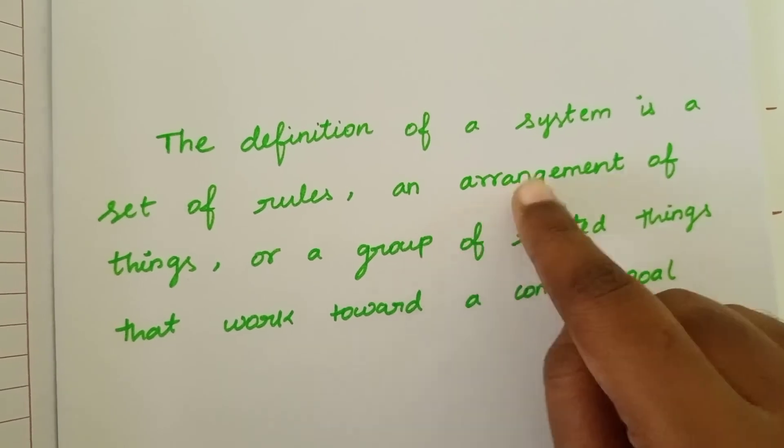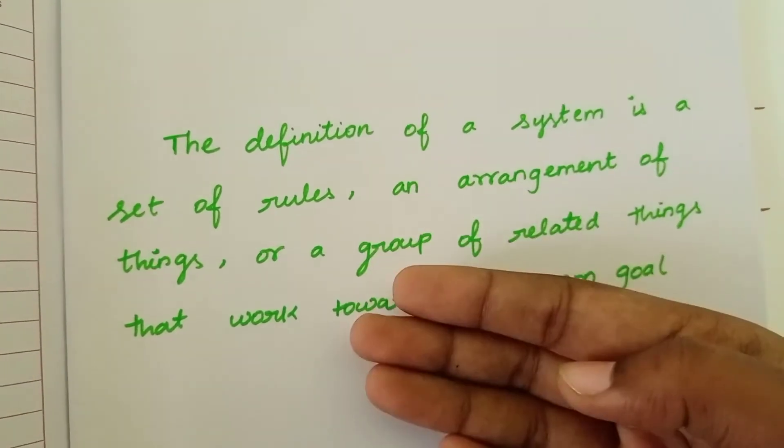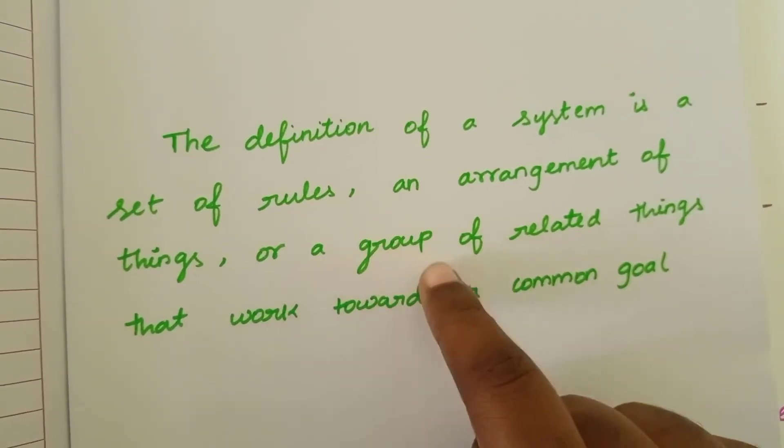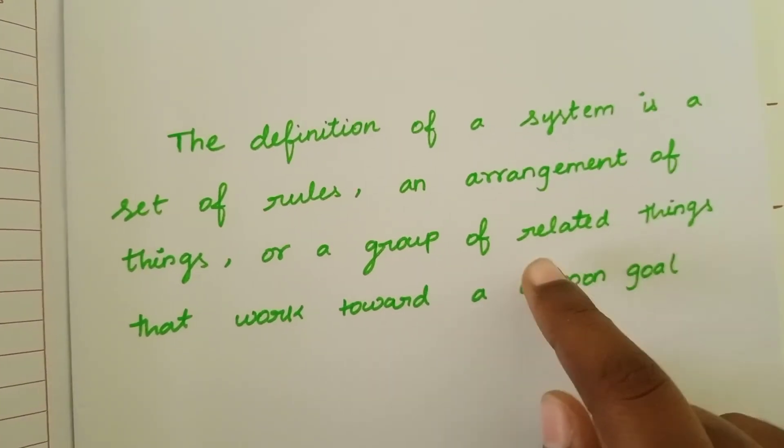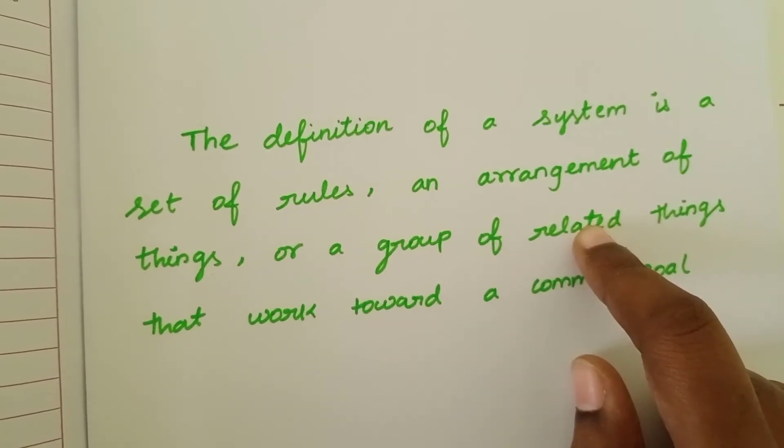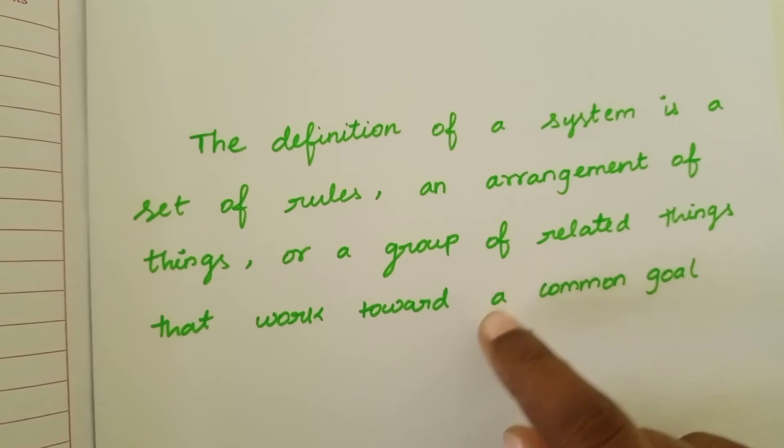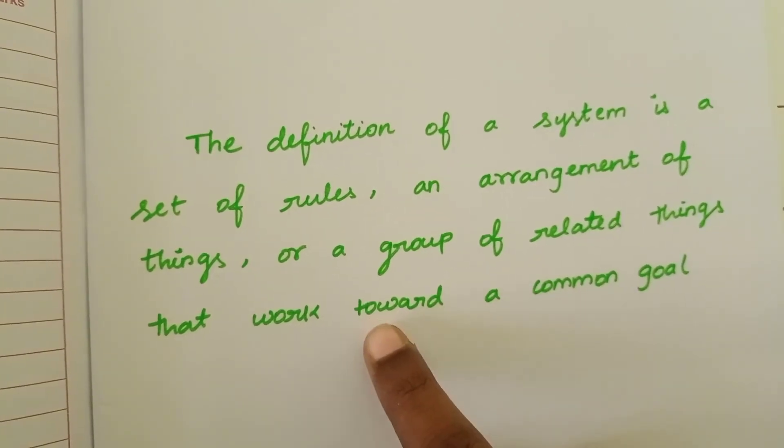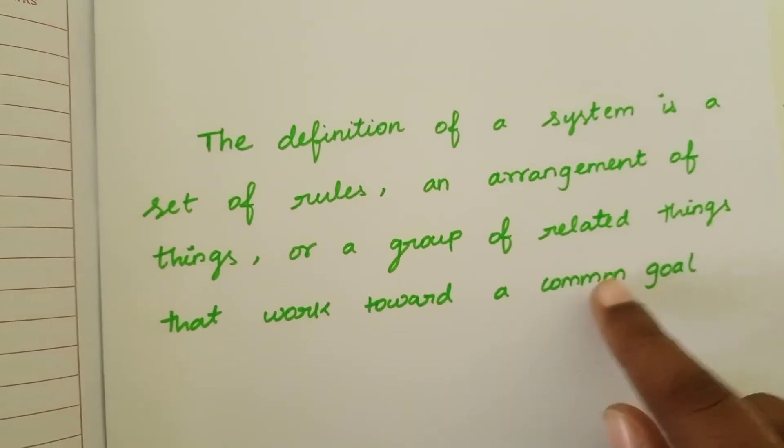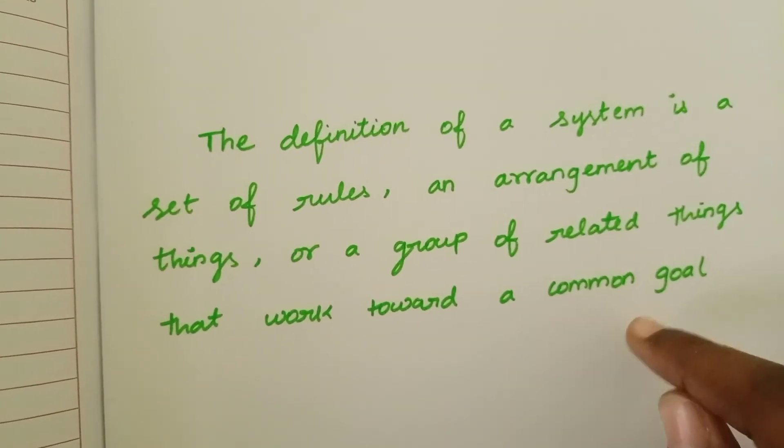It's an arrangement of things, or a group of related things that work toward a common goal. Like in a game, you have players, a goalkeeper, and they all work toward one goal with the rules correctly in place.